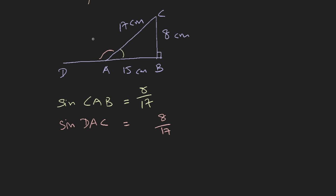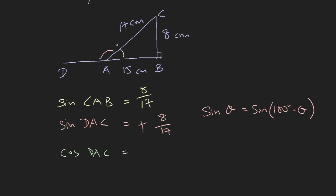You have to decide whether the sign is positive or negative. We already established that this angle is in the second segment, and sine of any angle in the second segment is positive, so sine of CAD is +8/17. Alternatively, you can use the formula: sine theta equals sine of (180 degrees minus theta). For cosine of DAC, I look at the acute side and the ratio of the adjacent side over the hypotenuse, which is 15 over 17, but because this is 180 minus the acute angle and cosine is negative in the second segment, the answer is negative.